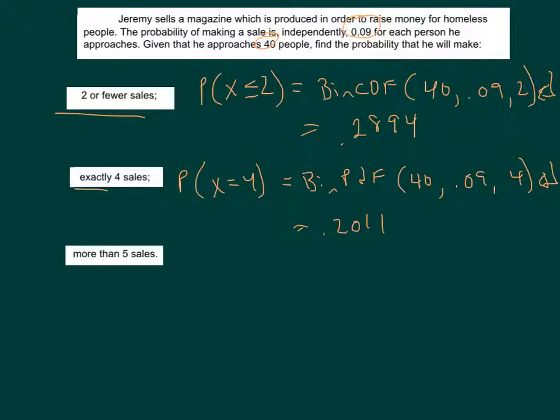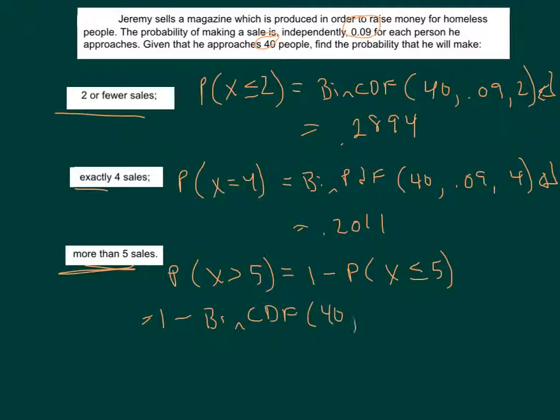Our final question here, more than five sales, so that's the probability of x being greater than 5. 5 is not included, so that's 1 minus the probability that x is less than or equal to 5. So that's 1 minus binomial CDF n of 40, p of 0.09, oops, there was a typo there, and 5 is my x. And again, I would do this as one fell swoop in my calculator and yields us an answer of 0.1465.